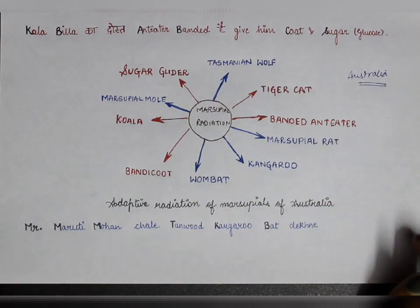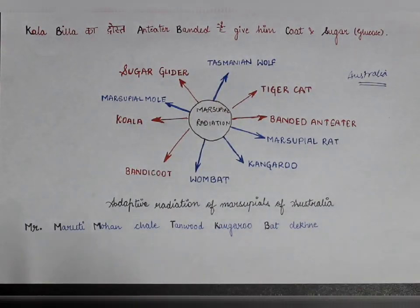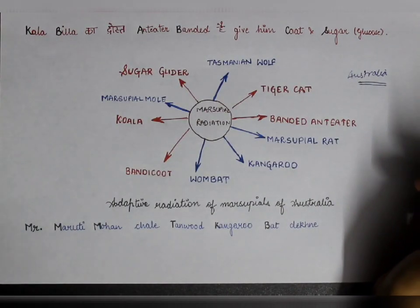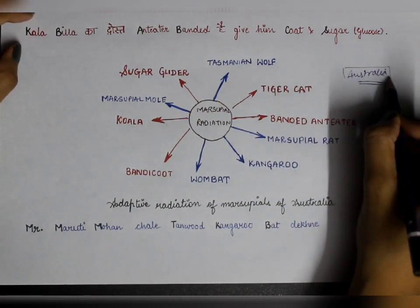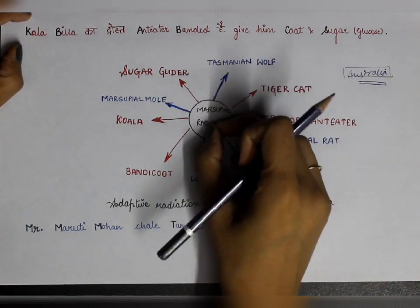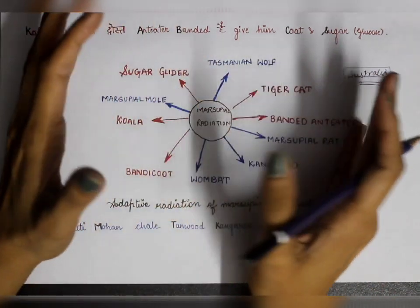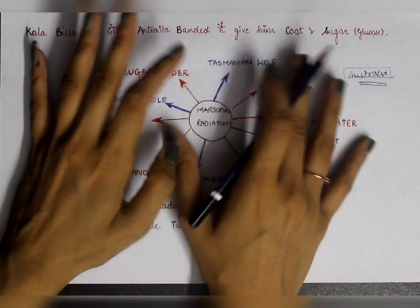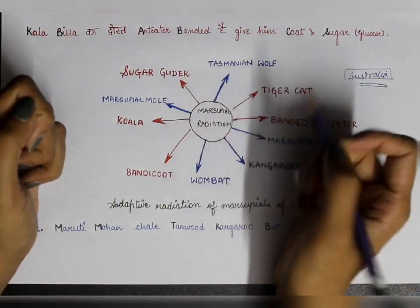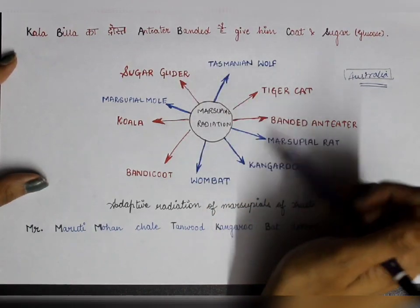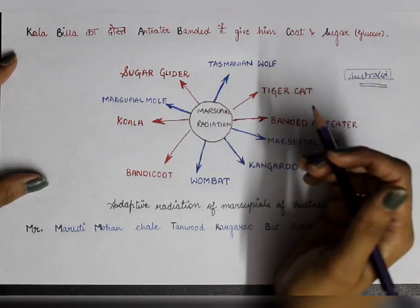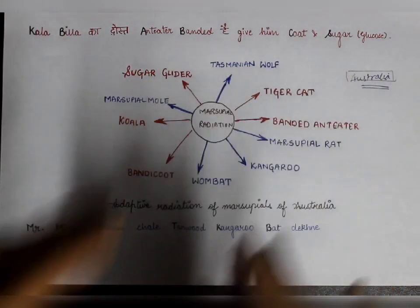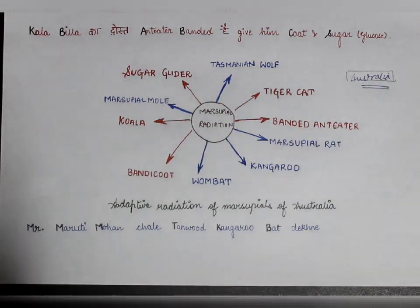Hello everyone! Welcome back to my channel Bansal Biology. In today's class we are going to discuss adaptive radiation which occurred in Australia. From a single origin, many species have originated on an island in Australia and many new species have formed. We are going to see the mnemonics of all these species so that it can be very easy for you to remember all the names of these animals. Let's get started.